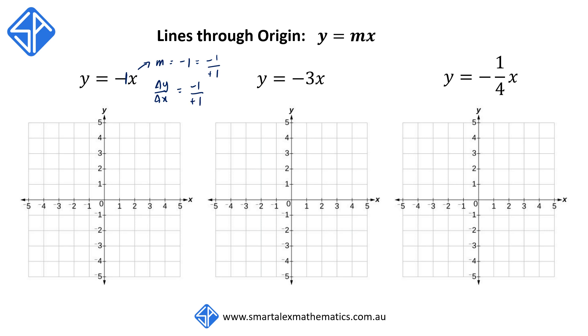Since the line goes through the origin, that's going to be our first point, (0, 0). Δx, our run, is plus 1 — so we're going to move across to the right by 1 unit.